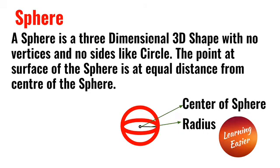A sphere is a three-dimensional shape with no vertices and no sides, like a circle. The point at the surface of the sphere is at equal distance from the center of the sphere.